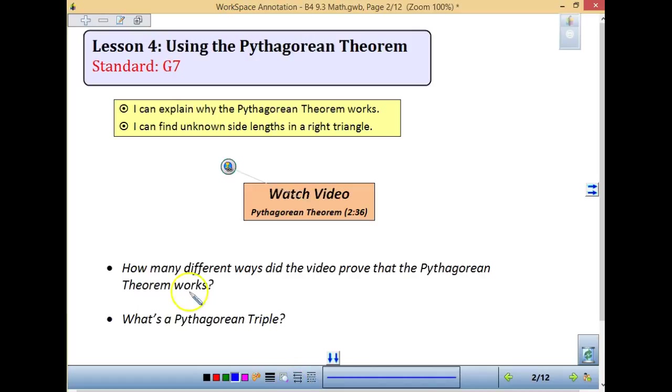As you take a look at today's lesson, we're going to be looking at explaining why the Pythagorean theorem works. We're going to look at finding an unknown side again in our missing triangle. So we're going to watch this video. As you watch it, you want to think what are the different ways that they prove this theorem. As you watch this, they're going to show you three or four, but there are hundreds.